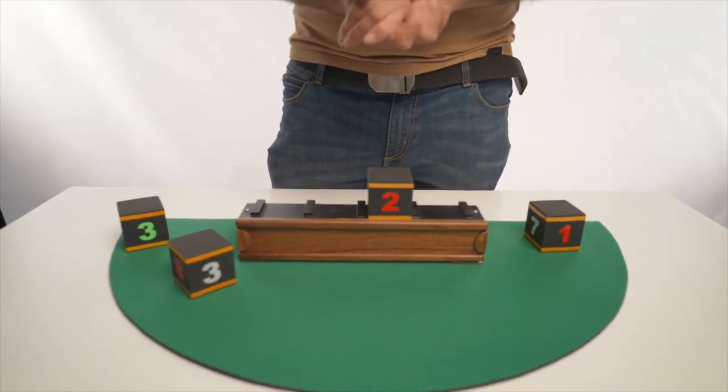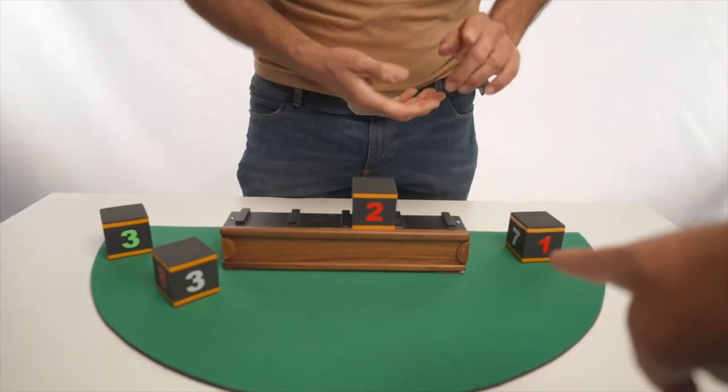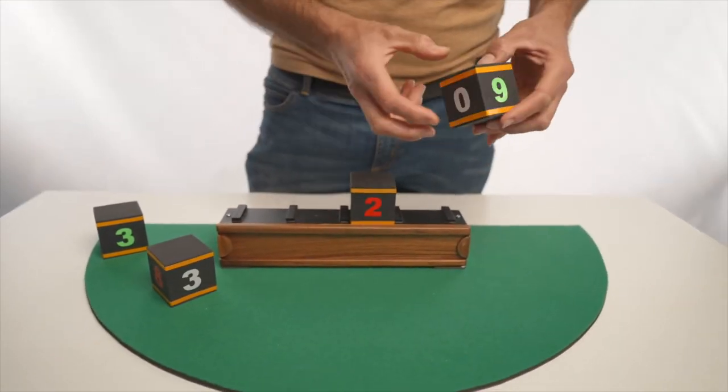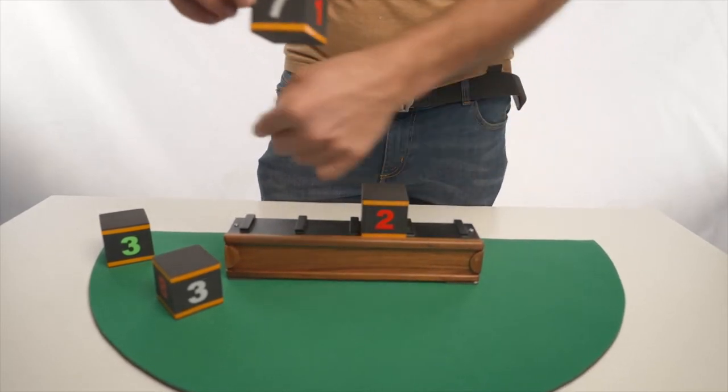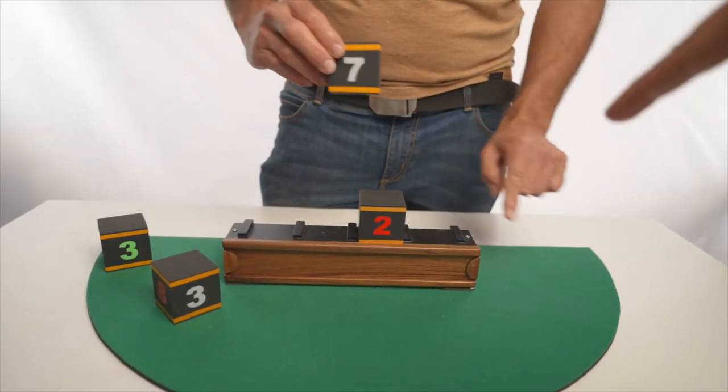Now, choose another cube. That one, with number one. OK, this cube has one, zero, nine and seven. Seven. OK, where shall I put it? In fifth position. OK, here.